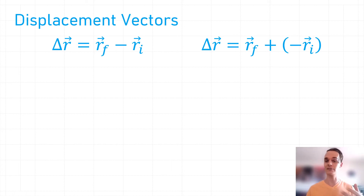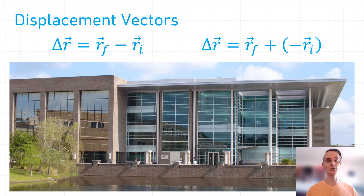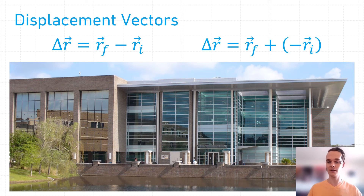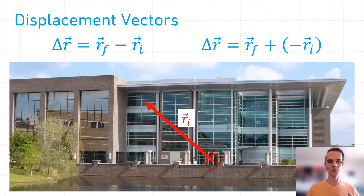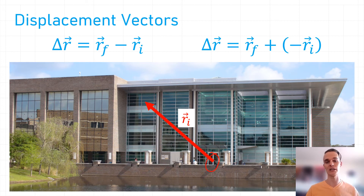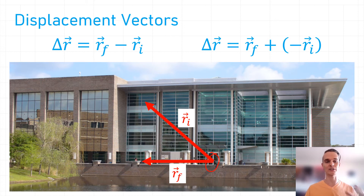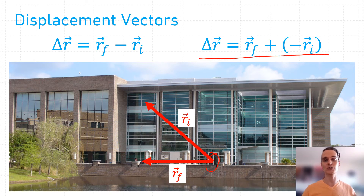Let's do a real-world example of a displacement vector. Suppose you're at the library and you take a journey from the third floor to the first floor. Whenever we define our final and initial position vectors, we need to choose an origin. For this problem, our origin is the front door of the library. The initial position vector has its tail at the origin and its tip at the third floor; the final position vector describes the first floor.